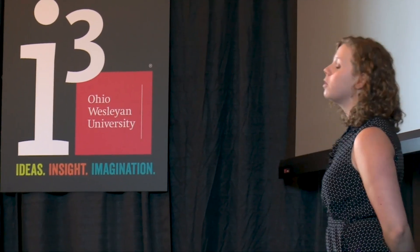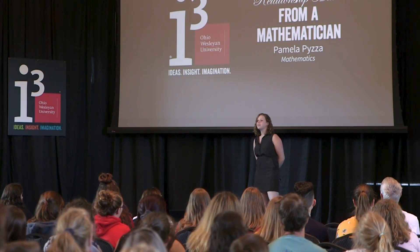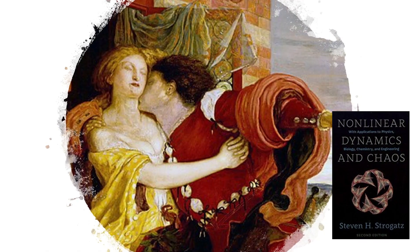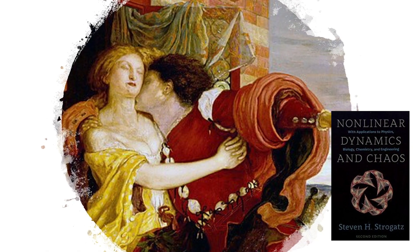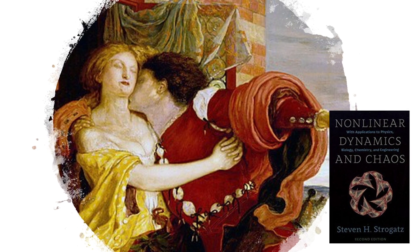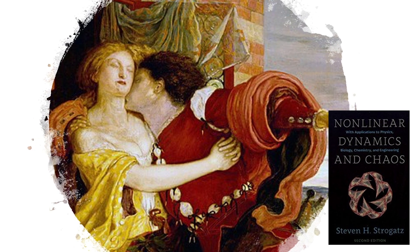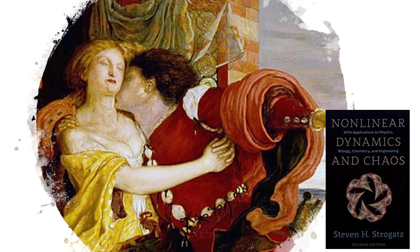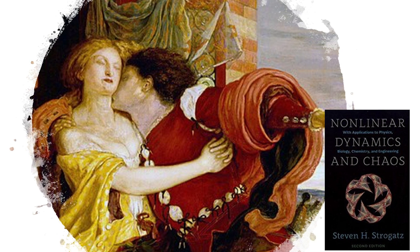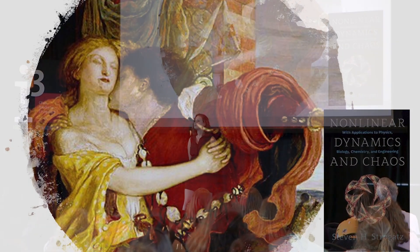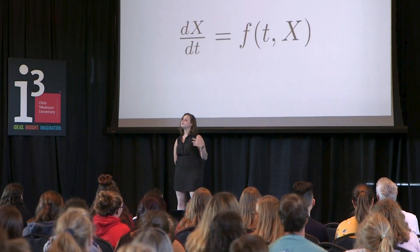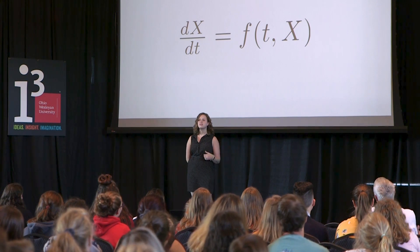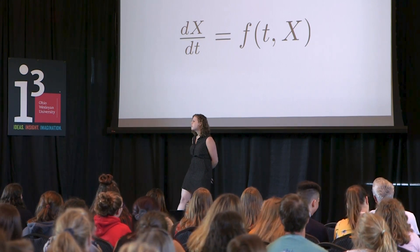What better way to explore a relationship than with the well-known and tragic love story of Romeo and Juliet. I wonder what these star-crossed lovers would have done differently had they had a better math teacher. This comes to us as an example from Strogatz's text on dynamical systems. We'll use dynamical systems and differential equations as the tools to talk about this problem.